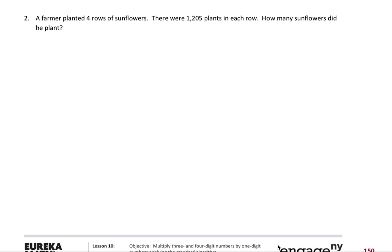So we'll get right into our word problem. It tells us a farmer planted four rows of sunflowers. There were 1,205 plants in each row. How many sunflowers did he plant?